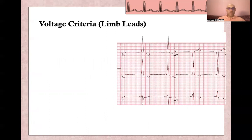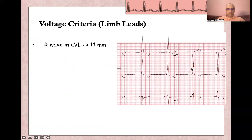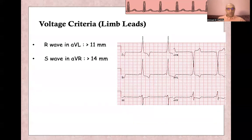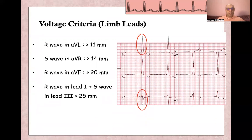Starting with voltage criteria in limb leads: R-wave in lead aVL should be more than 11 millimeters. S-wave in lead aVR should be more than 14 millimeters. R-wave in lead aVF should be more than 20 millimeters. R-wave in lead I plus S-wave in lead III should be more than 25 millimeters. Here the S-wave is almost 11 millimeters plus the R-wave which is more than 15 millimeters, totaling more than 25 millimeters.